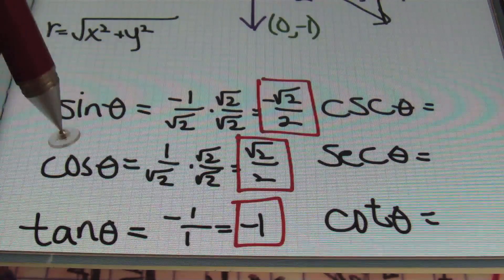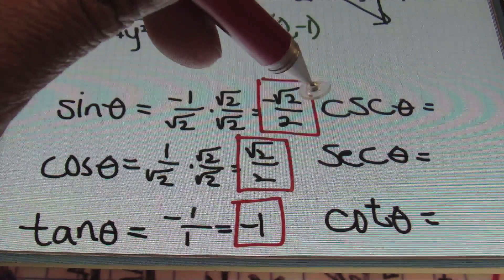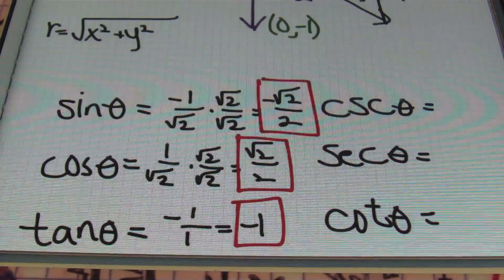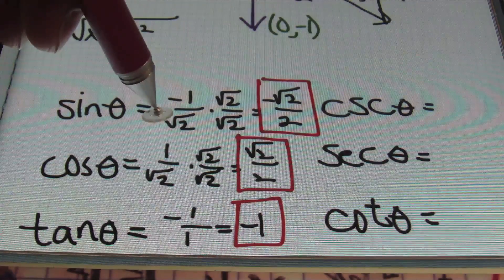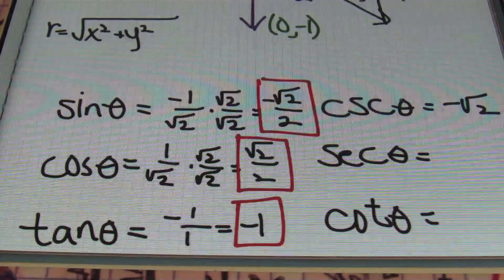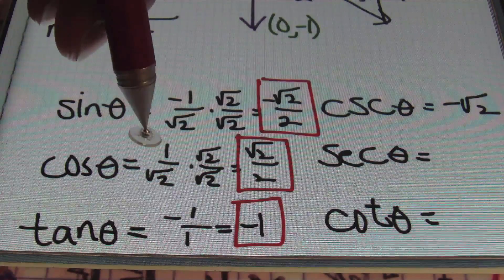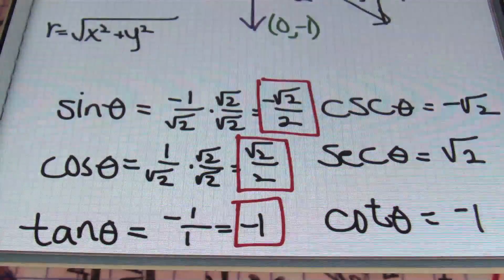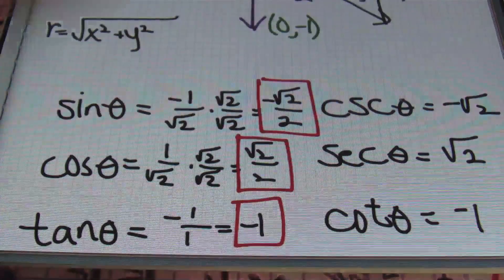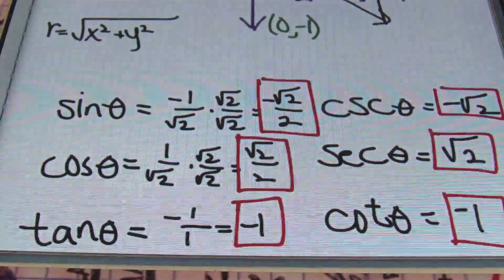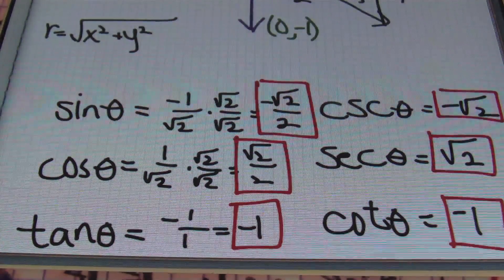Remember, the reciprocal of sine, cosine, and tangent are, respectively, cosecant theta, secant theta, and cotangent theta. All you've got to do is flip those results. Starting with negative 1 over square root of 2 and flipping that to get a negative square root of 2 for cosecant. Looking at my cosine value of 1 over square root of 2, the reciprocal of that will simply be the square root of 2 for secant. And then finally, the reciprocal of negative 1 is just negative 1 for cotangent. Those are the three reciprocals of our first three trig values, thus completing the problem and answering the last problem for today's tutorial.